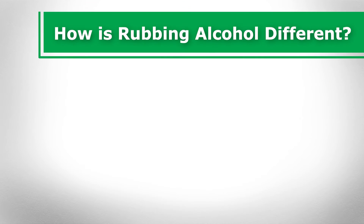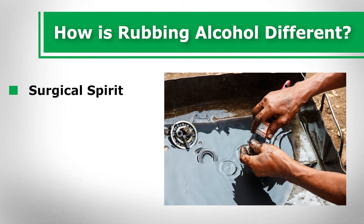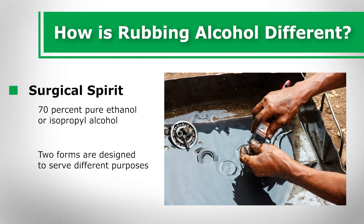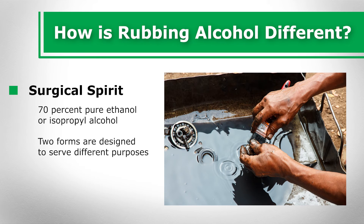How is rubbing alcohol different? Rubbing alcohol is considered to be a surgical spirit rather than a methylated spirit since it is used in medical environments as a topical application. It is a type of denatured alcohol prepared from a special solution consisting of roughly 70% pure ethanol or isopropyl alcohol in its concentrated form. The generic term rubbing alcohol is used to describe either isopropyl or ethyl-based products with similar qualities and is essentially a unique type of denatured solution. The two forms are designed to serve different purposes, and antiseptic versions can be used as a gentle solvent substitute for home and business applications.